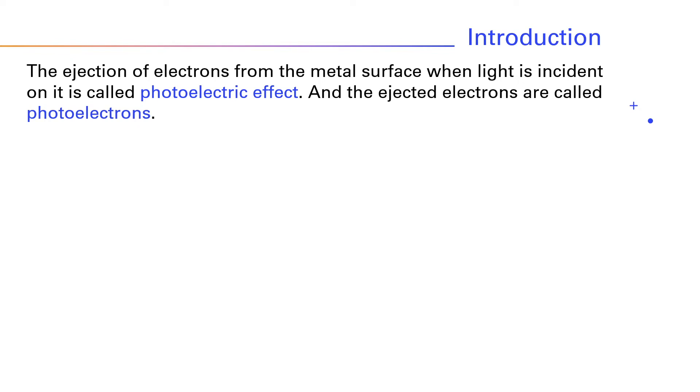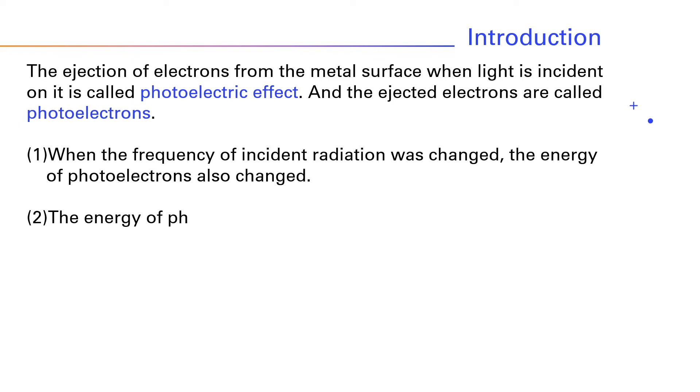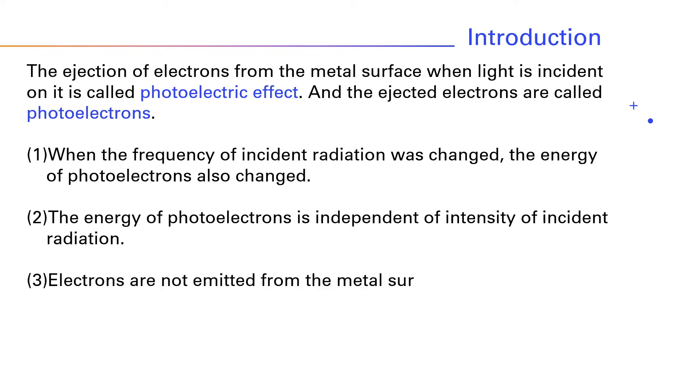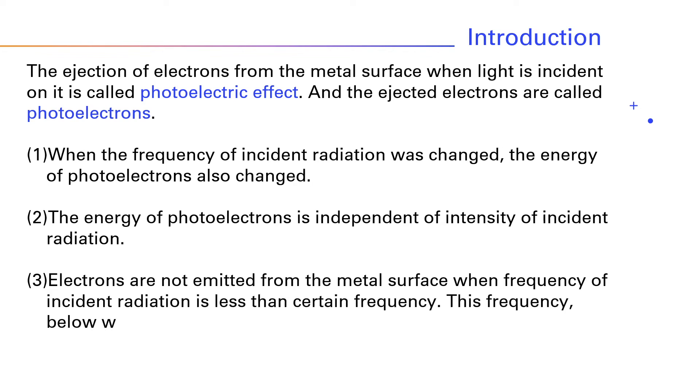And the ejected electrons are called photoelectrons. When the frequency of incident radiation was changed, the energy of photoelectrons also changed. The energy of photoelectrons is independent of intensity of incident radiation. Electrons are not emitted from the metal surface when frequency of incident radiation is less than certain frequency. This frequency, below which there is no emission of electrons, is called threshold frequency.